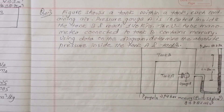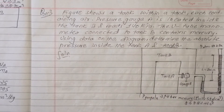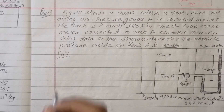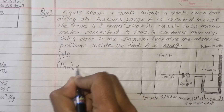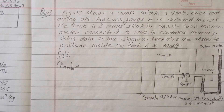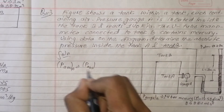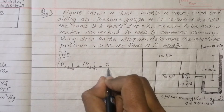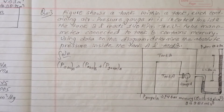We have to find the absolute pressure inside tank A and tank B. Absolute pressure of tank A, absolute pressure of tank B, absolute pressure of B plus P of A — these are the values we need to determine.